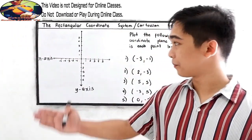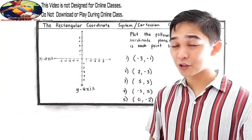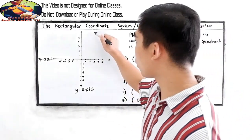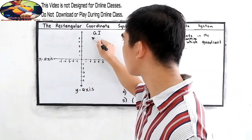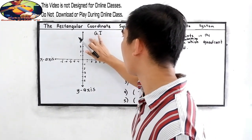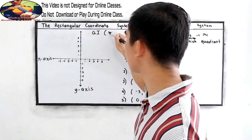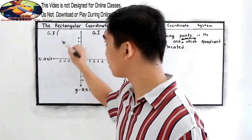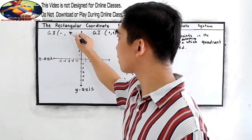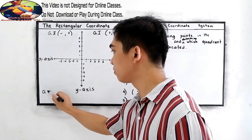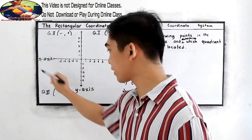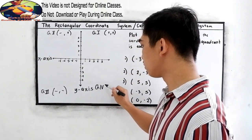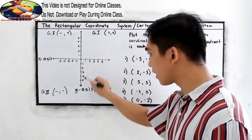This is our coordinate system. Let us have a short review about the different signs of our quadrants. In quadrant one, the sign is positive, positive. In quadrant two, we have negative for x and positive for y. In quadrant four, positive for x and negative for y.